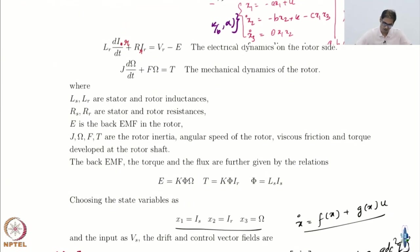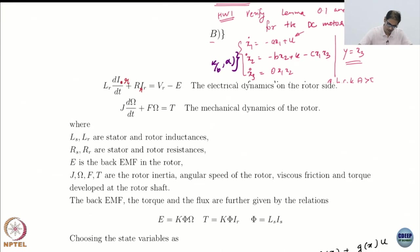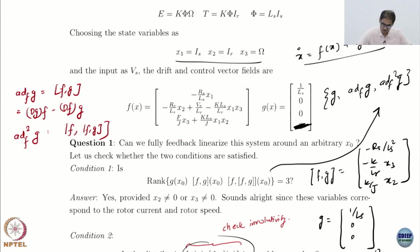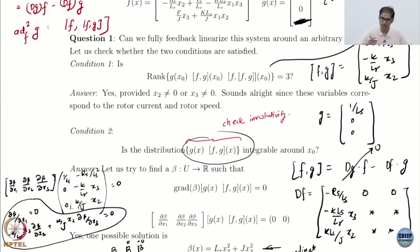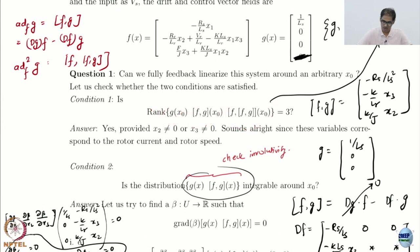We looked at it specifically for the DC motor case. There was this DC motor dynamics — basically it is an f(x) plus g(x)u. We have been looking at single input systems, just to make things easier. We were required to check only two conditions: first, that g, ad_f g, ad_f² g, all the way to ad_f^(n-1) g is linearly independent. In this case n-1 gives us ad_f² g, which was one thing we were required to verify.